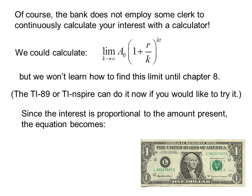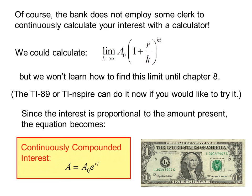Since the interest is proportional to the amount present, the equation becomes continuously compounded interest, a equals a sub 0 e to the rt.